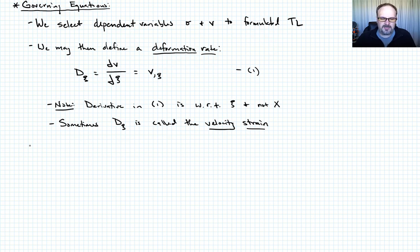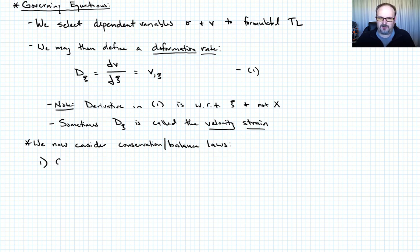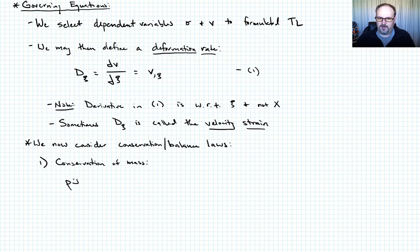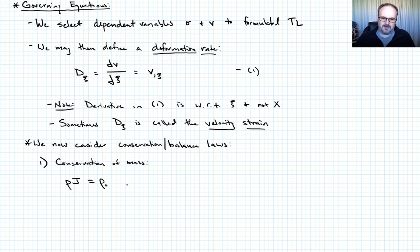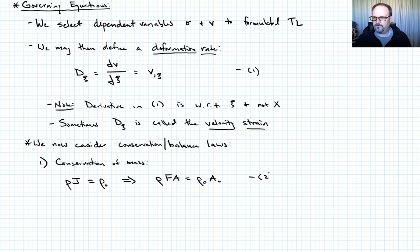Conservation of mass looks exactly the same as in the total Lagrangian case. We always have the density times the Jacobian — the ratio of deformed to undeformed volume — equal to the initial density. In the 1D case, this expands to: rho times F (the deformation gradient) times A equals rho-naught times A-naught (equation two). Note this is identical to the total Lagrangian formulation; nothing changed.